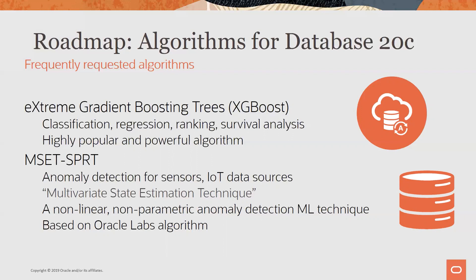Another new algorithm is MSET-SPR, based on an Oracle Labs algorithm, intended to support anomaly detection for sensor data. IoT data sources are becoming more prevalent, and identifying data values signaling trouble is critical. Imagine a farm of wind turbines — each with many sensors — where you want to know if a combination of problems could result in downtime, monitoring across all turbines in the farm. This is one possible use case.